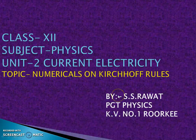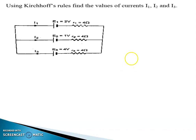Good morning students. Today we are going to discuss the numericals on Kirchhoff's rules. Kirchhoff's rules are applied in circuits which are complicated, where we cannot apply Ohm's law. There are two rules: one is the junction rule — the algebraic sum of all currents meeting at a junction is equal to zero — and the second one is the loop rule, which states that the algebraic sum of the product of current and resistance and the EMF in that particular closed loop is equal to zero. This question is based on Kirchhoff's rules.